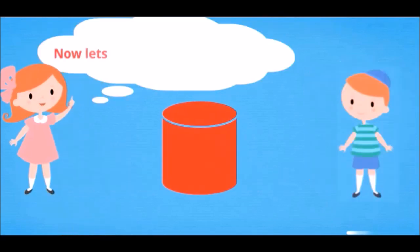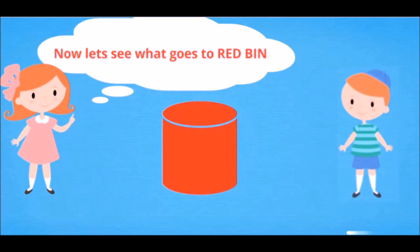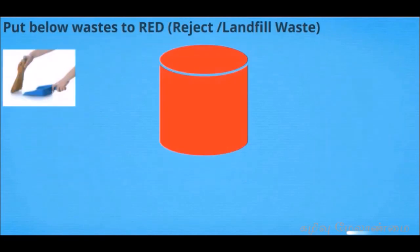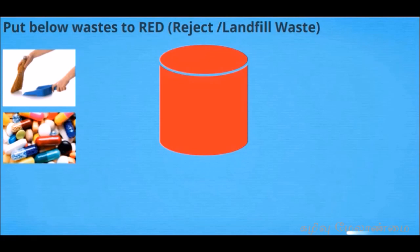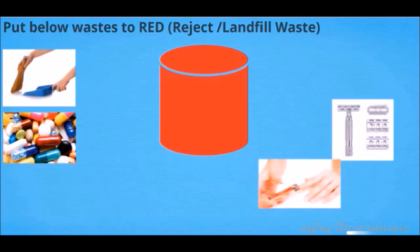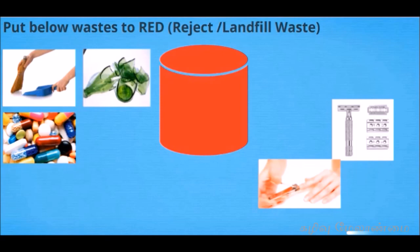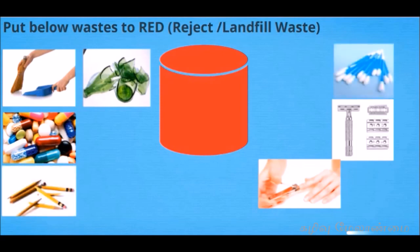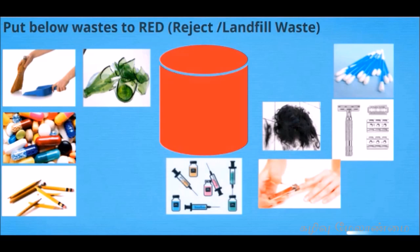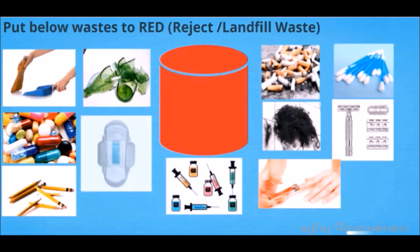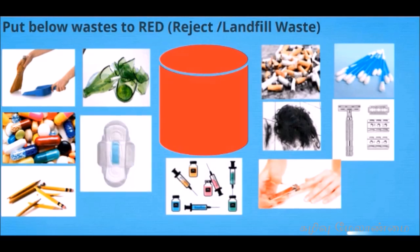Now let's see what goes to the red bins. Swept dust, tablets, nails, razors, broken glass, broken pencils, earbuds, hair, needles and syringes, cigarette butts, diapers, and sanitary napkins.